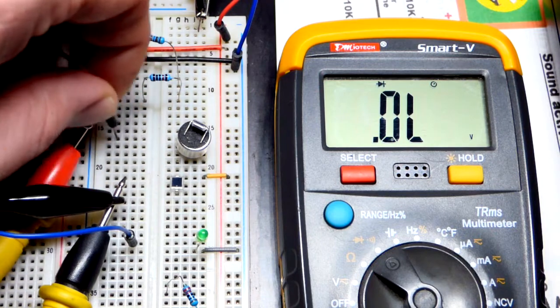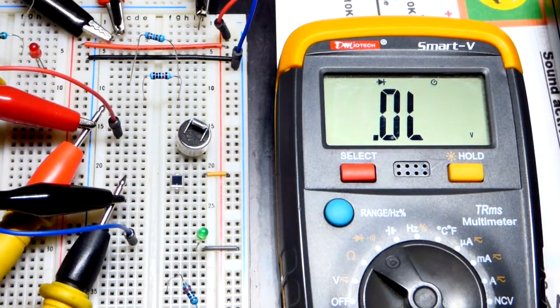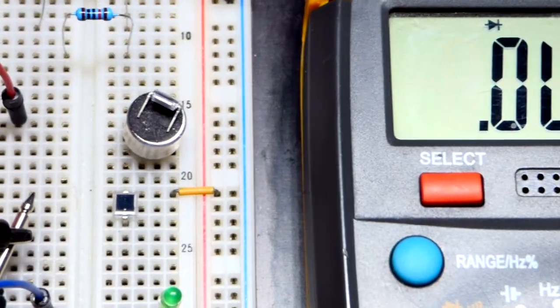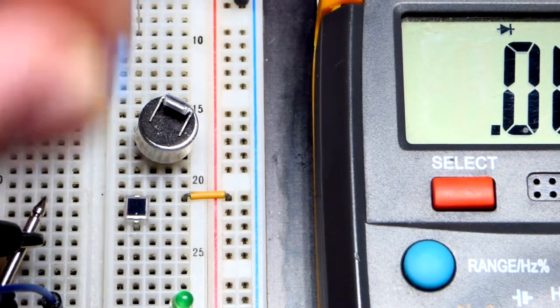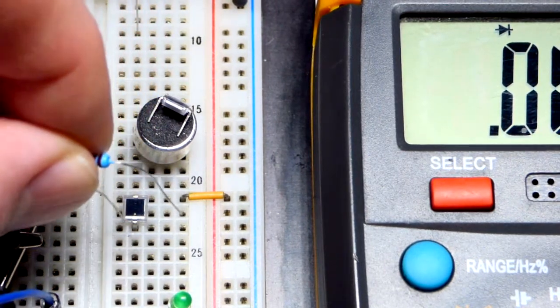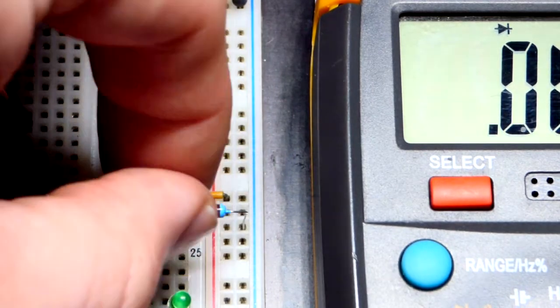Now the way that this usually is used from what I've seen, so this is a new component to me, is as a voltage divider. So I'm going to take a 10 kiloohm resistor here and I'm going to put that to the negative rail. So now we have a complete circuit right there.